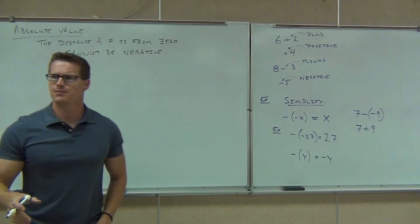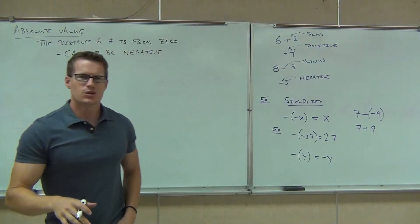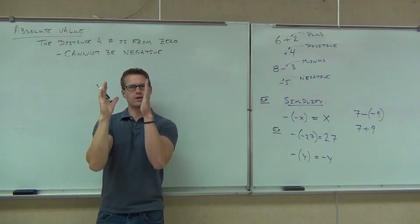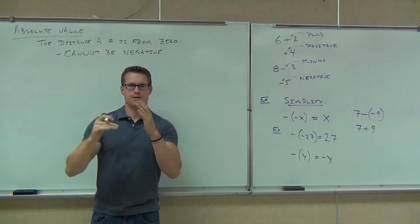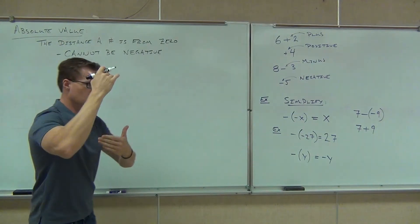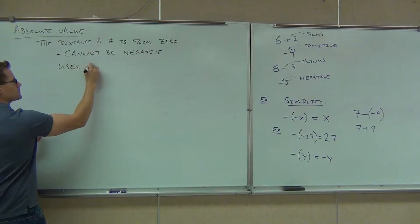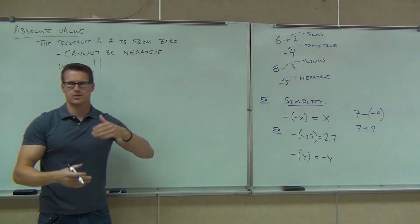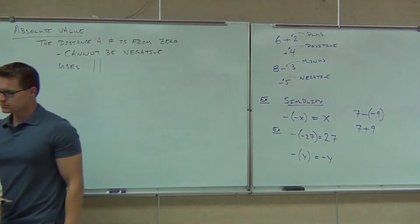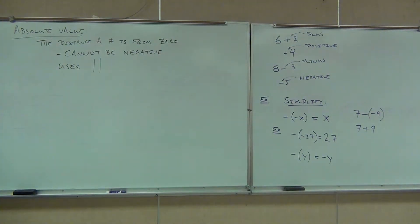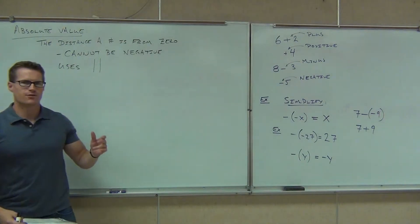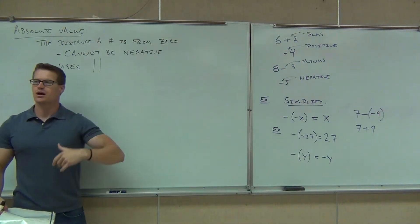Also, it uses a couple symbols that we need to be familiar with. It uses these vertical lines that are a little bit longer than like ones. They go taller and shorter than that. So it uses this. They're like elongated ones without the thing on the bottom. And what this says to you is, I want you to find the distance, whatever the number I put in here is, from zero.